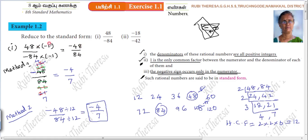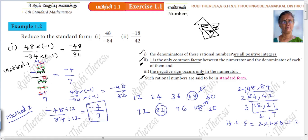But before this you must do the step of multiplying by minus 1 over minus 1 — without doing this you should not proceed. So 48 by minus 84 multiplied by minus 1 over minus 1 gives minus 48 divided by 84, and then you apply HCF. Method one is preferable for those who know 12 is the common factor and are thorough with tables, but use whichever method is convenient.